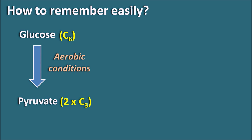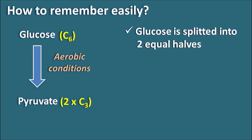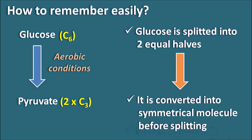Glycolysis involves many steps, but we can easily remember them by studying logically. Since glucose is converted into two pyruvate molecules, glucose must be split into two equal halves. In order to split into two equal halves, the glucose must first be converted into a symmetrical molecule before splitting.